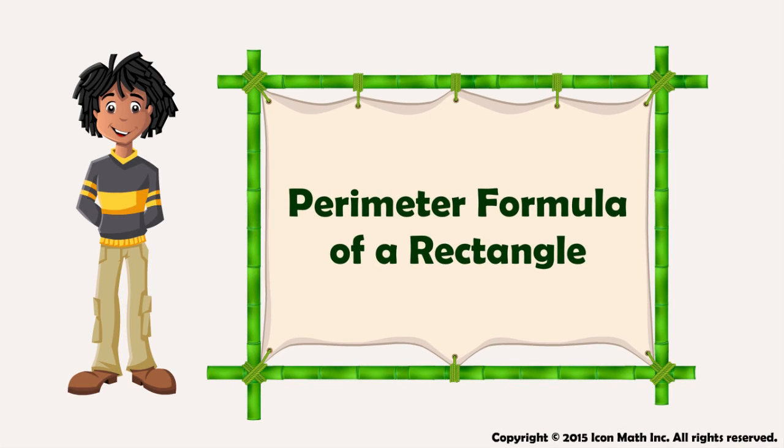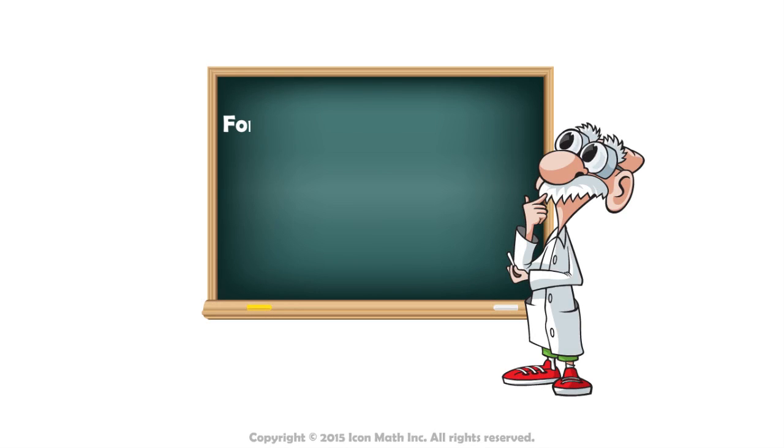Perimeter Formula of a Rectangle. A formula is a rule that uses symbols to relate quantities.